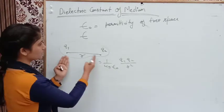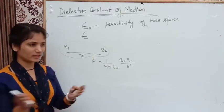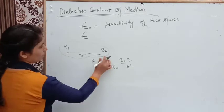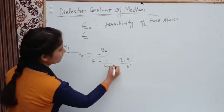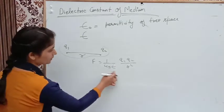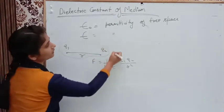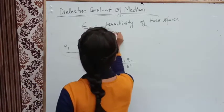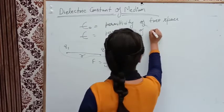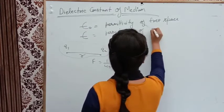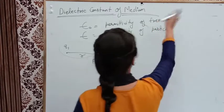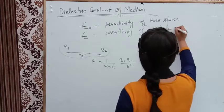When charges are kept in a medium — such as vacuum, air, water, or any other medium — we use epsilon, which is the permittivity of that particle medium. Free space means vacuum, meaning there is no particle medium.